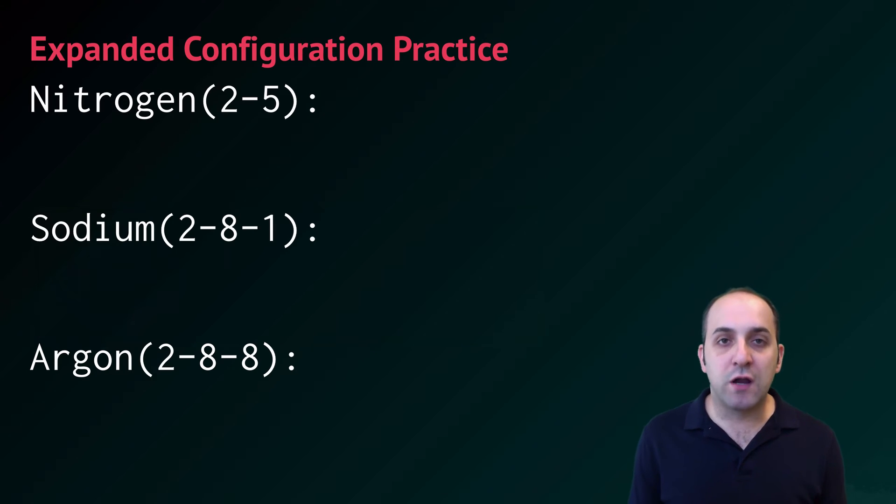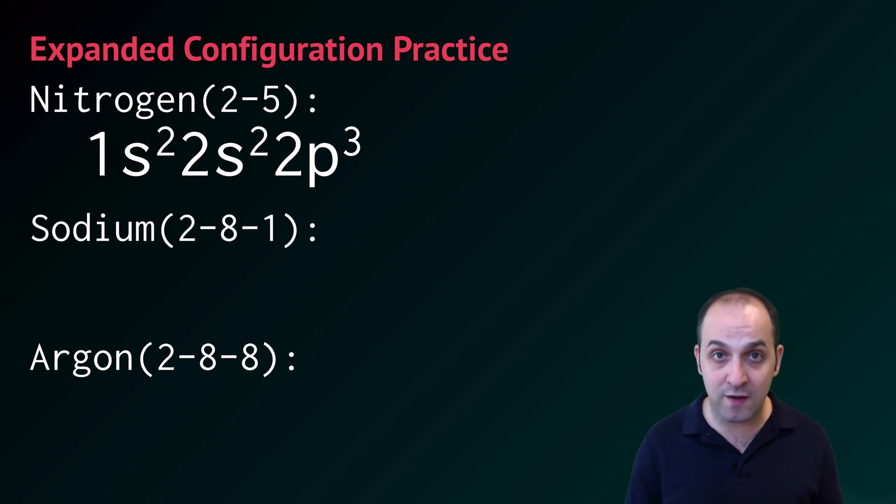Let's do the expanded electron configurations for nitrogen, sodium, and argon. If you want, pause the video and try to do it on your own. Nitrogen has a basic electron configuration of 2-5, and so if we want to write this out expanded it would be 1s2, that's the 2 in the basic configuration, then 2s2, 2p3. Those five electrons in the second principal energy level are going to fill the S sublevel first. The S sublevel can fit a total of two of them, and then the remaining three will go into the P sublevel.